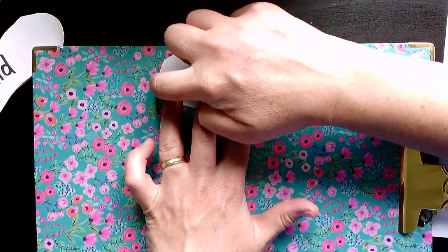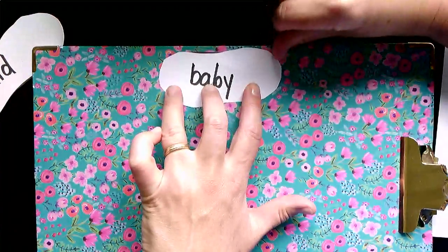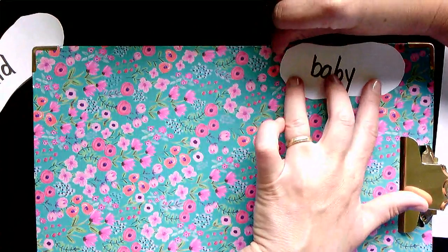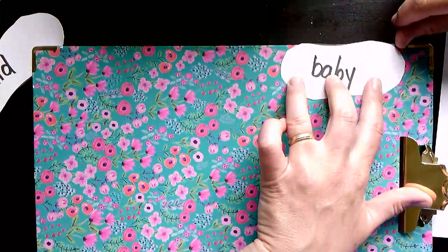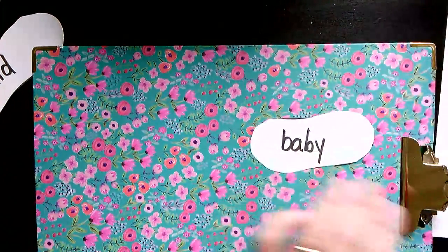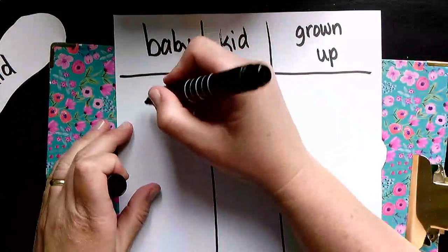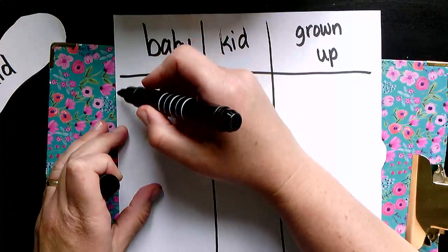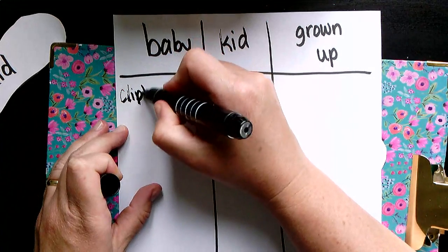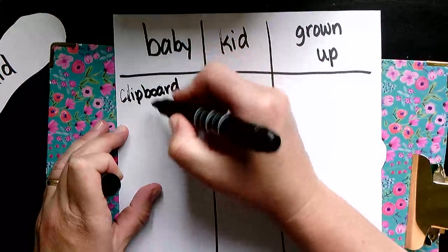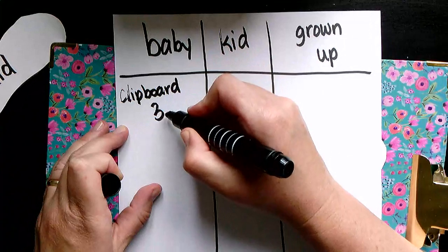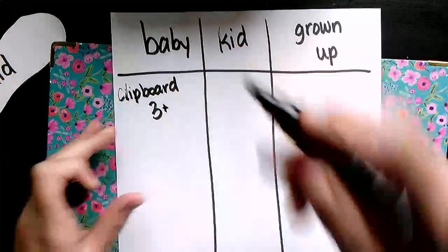So that's one baby shoe, and two baby shoes, three baby shoes, and a little bit. So on my chart, I'm going to say that when I measured the clipboard, it was three baby shoes and a little bit. So I'm going to say three plus.